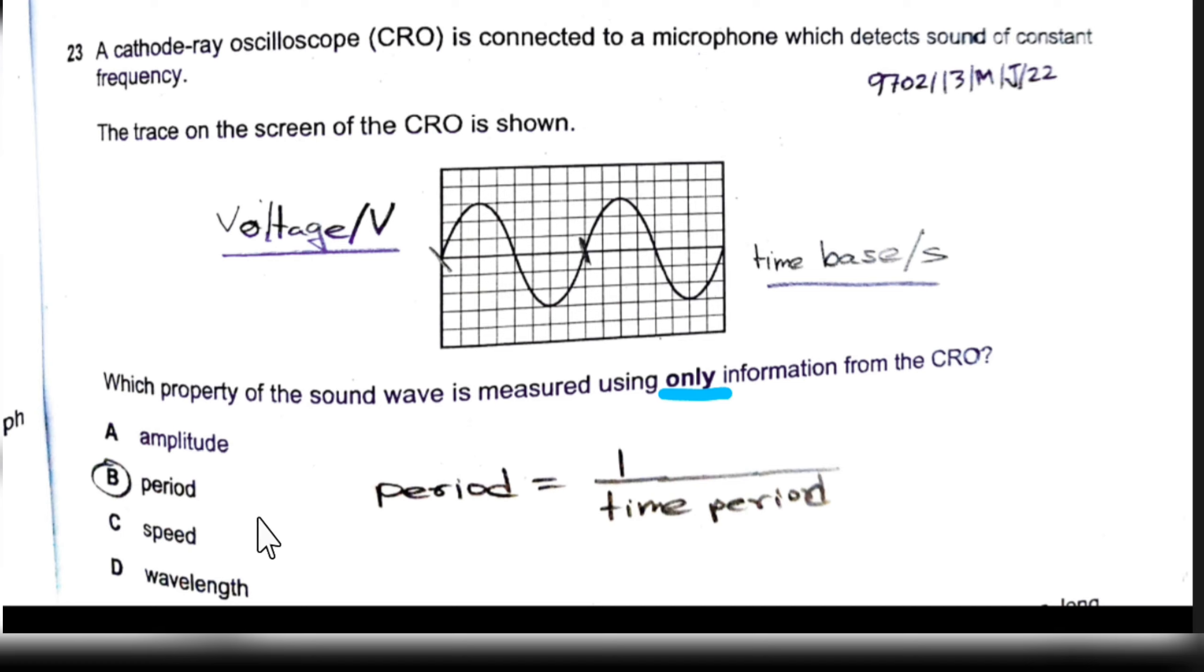We can't measure the speed since we don't know the distance traveled. We know the time but we don't know the distance, so we can't measure the speed.